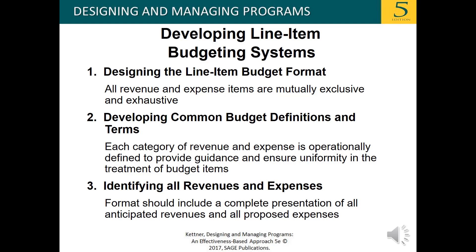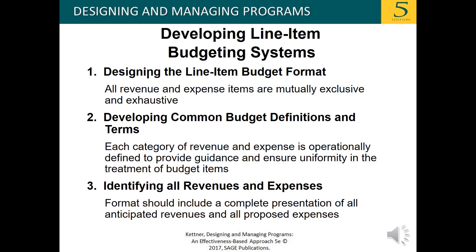Step 3 is identifying all revenues and expenses. The format should include a complete presentation of all anticipated revenues and all proposed expenses. Step 4 is balancing the budget. The line item budgeting system clearly indicates if the budget is balanced or unbalanced, and the format facilitates identification of where proposed expenses might be reduced or where additional revenues might be sought to bring the finalized budget into balance.